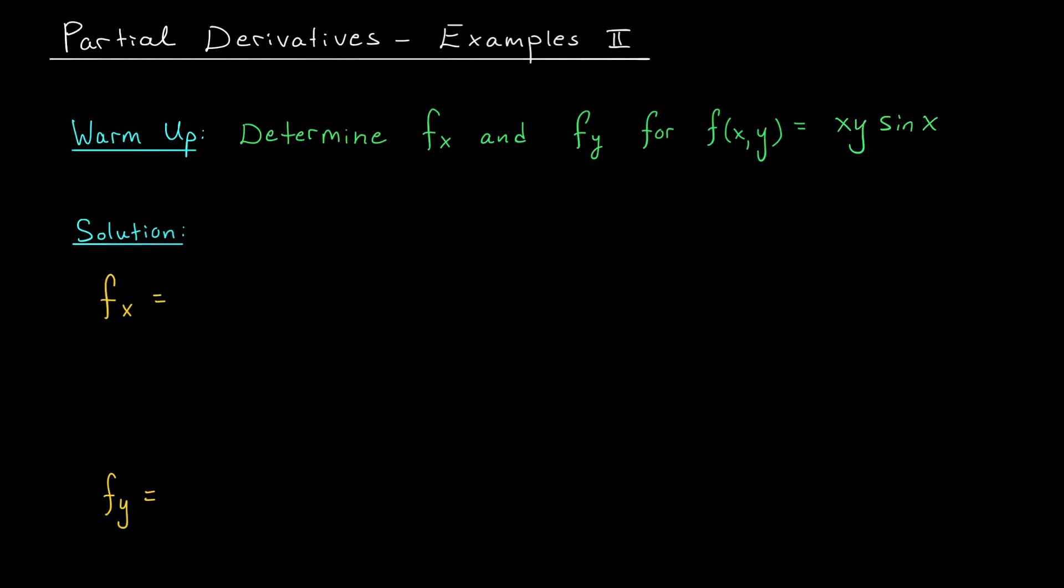To start our lesson we have a little warm-up exercise. I'd like you to compute fx and fy for this function, f(x,y) equals xy sine x. Now I know what you're thinking, what are these things, fx and fy? We haven't seen that before. Well, you're right. We haven't seen this notation before. But these symbols, fx and fy, are just another way of describing the partial derivative with respect to x and the partial derivative with respect to y. It's a little bit more compact than our partial over partial x notation from the last lesson.